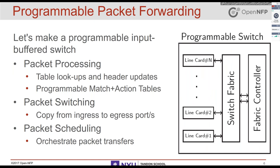We have a few ingredients for packet forwarding. First and foremost, we need to process packets - programmable table lookups, match-action tables, whatever P4 provides. These can be implemented as line cards. Second, we need to switch packets between line cards to implement packet forwarding - we need a fabric to copy packets from an ingress board to an egress board. Finally, we need to do that efficiently, handling input port contentions and head-of-line blocking. So we need a packet scheduler to do the switching efficiently.